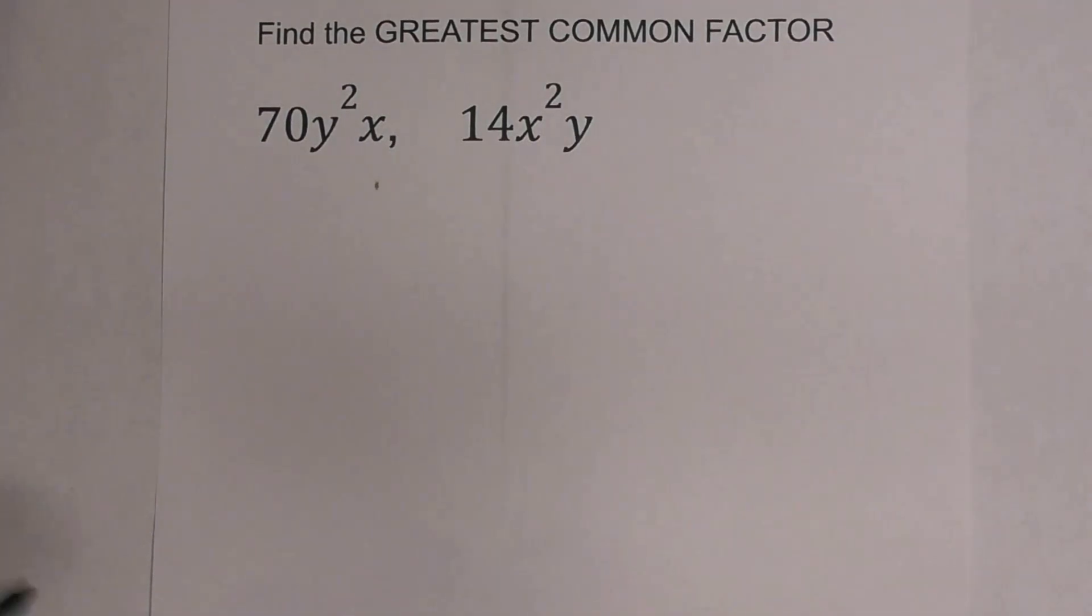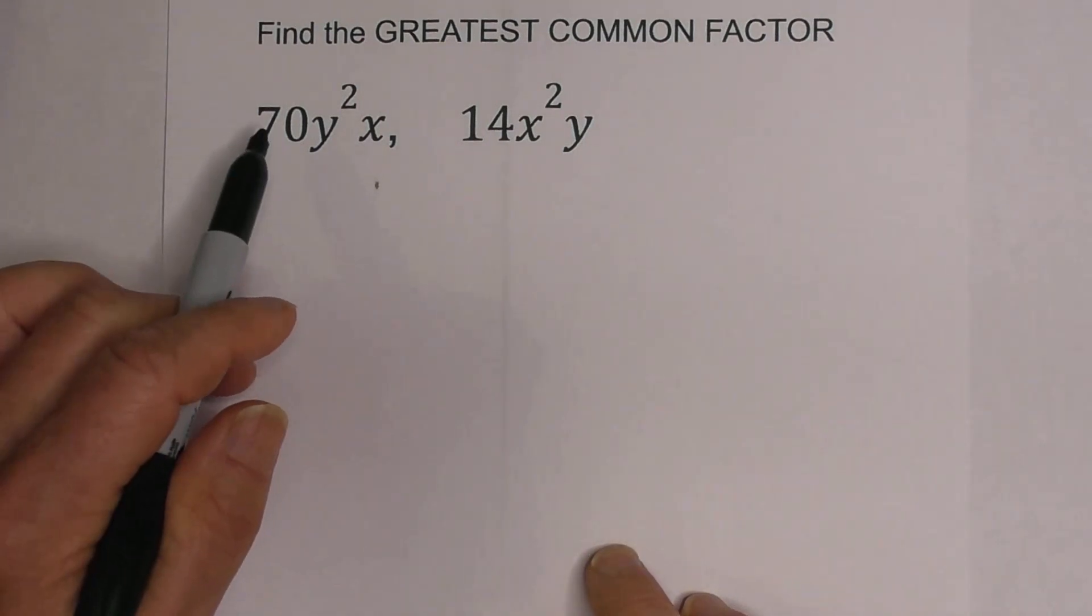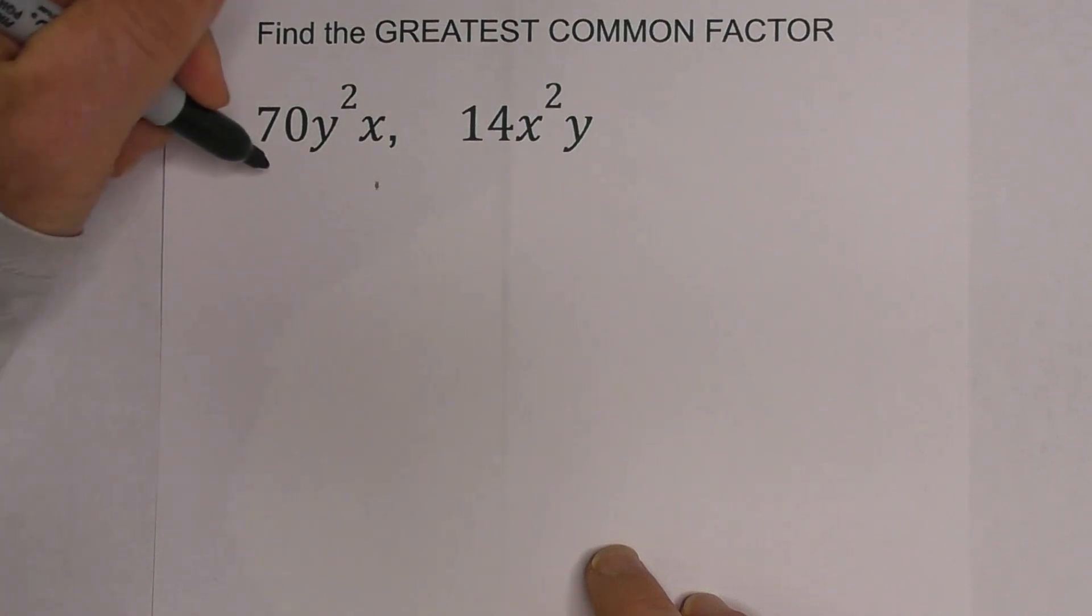How do you find the greatest common factor when you have exponents and variables? So let's get started. Let's first find the greatest common factor of 70 and 14, and I like to use a factor tree.